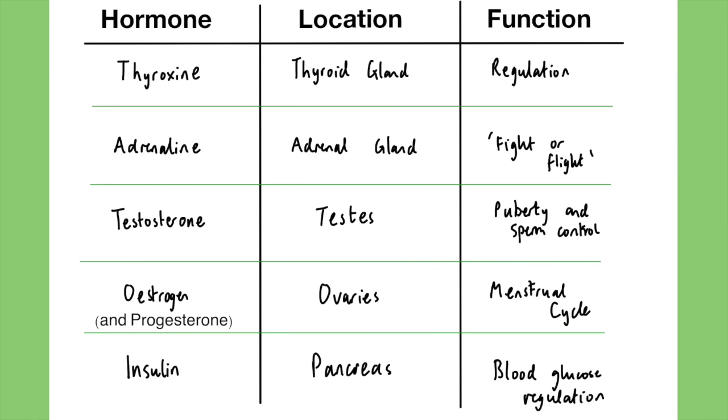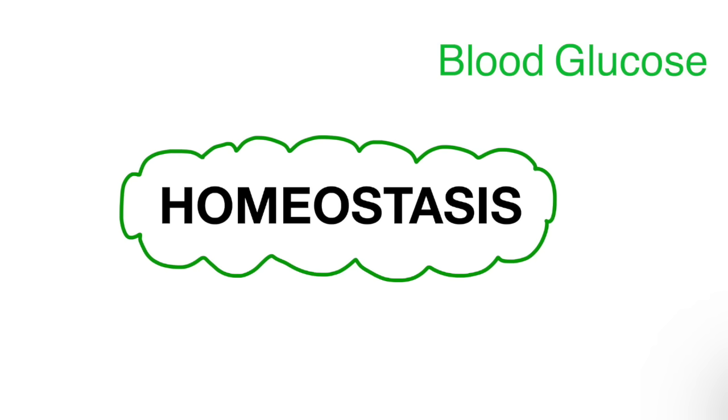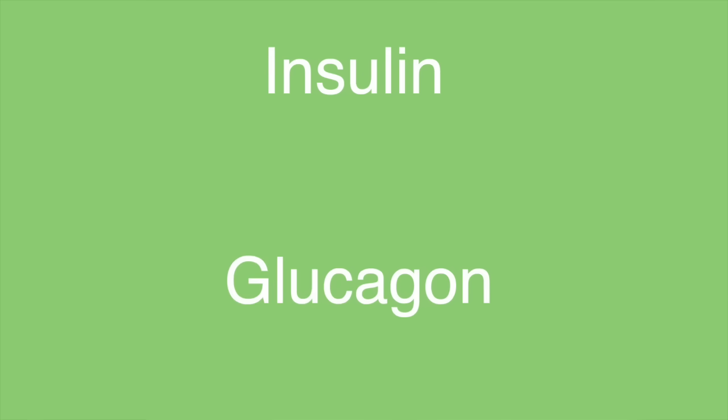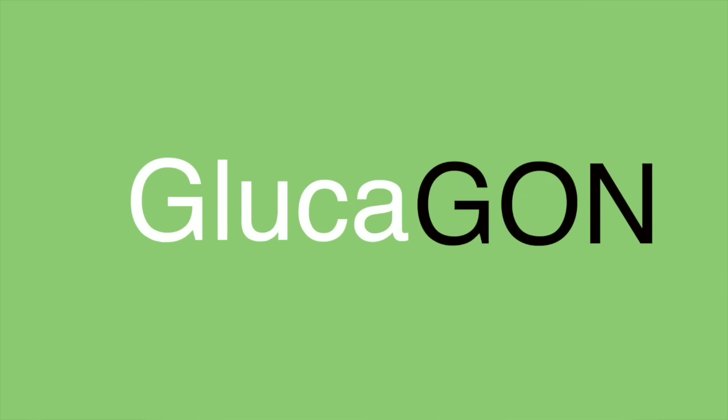Next, we have the endocrine system. This is basically the hormonal system that your body has, and here is a list of all the hormones, where they come from, and the function of them. In our definition of homeostasis, we talked about the balancing of blood glucose in your body. The two main hormones responsible for this are insulin and glucagon. Insulin is released when sugar goes in, and glucagon is released when glucose is gone — so when you don't have enough sugar. Water is balanced by the ADH hormone and your kidneys.